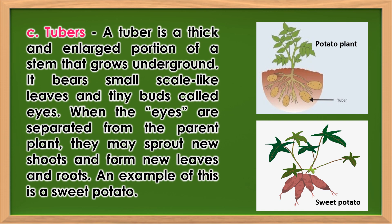Tubers: A tuber is a thick and enlarged portion of a stem that grows underground. It bears small scale-like leaves and tiny buds called eyes. When the eyes are separated from the parent plant, they may sprout new shoots and form new leaves and roots. An example of this is a sweet potato.